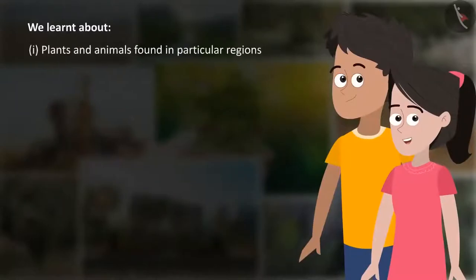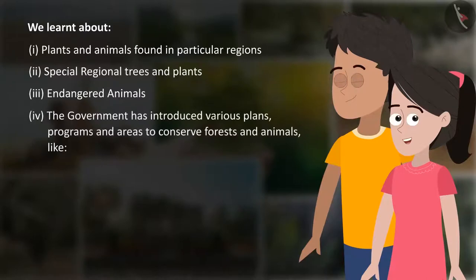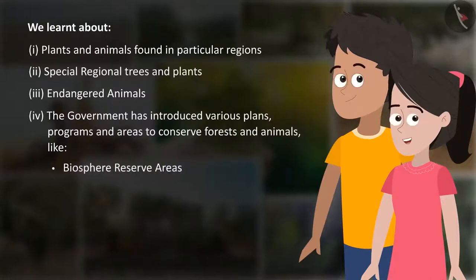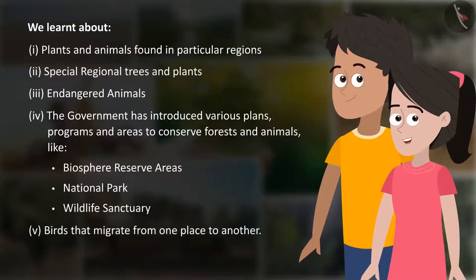We learnt about plants and animals found in particular regions, special regional trees and plants, and endangered animals. The government has introduced various programs and areas to conserve forests and animals, like Biosphere Reserve Areas, National Parks, Wildlife Sanctuaries, and we also covered birds that migrate from one place to another.